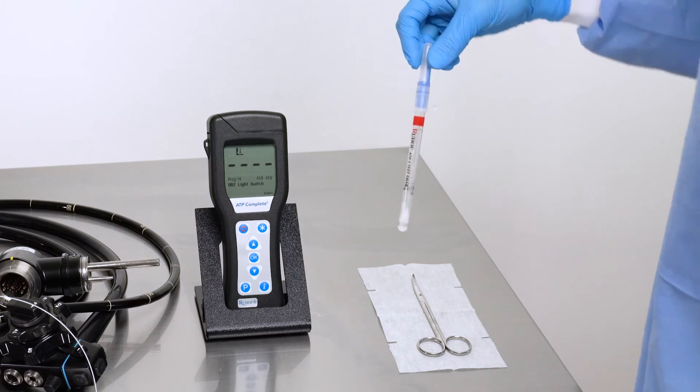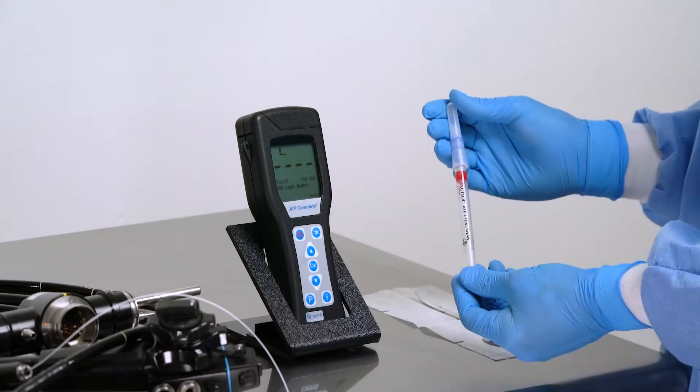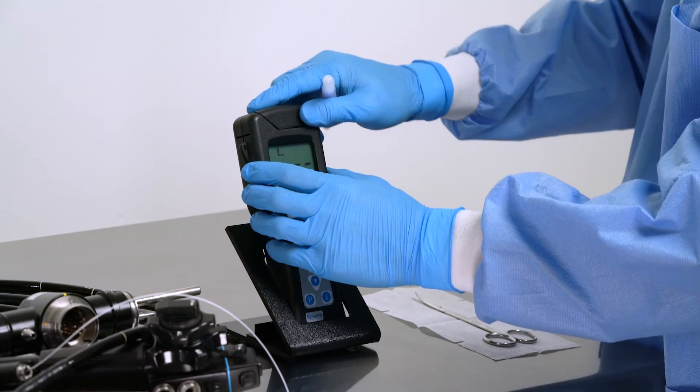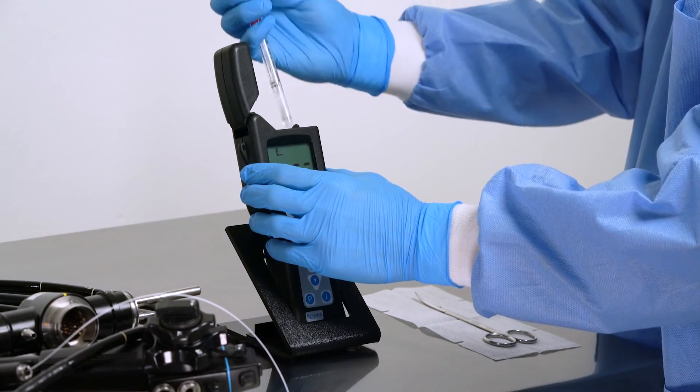Insert the test swab tube into the Ruhoff ATP Complete handheld device, close the lid and press the OK button.